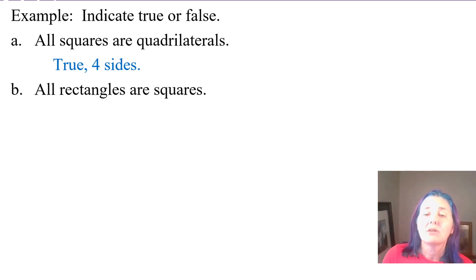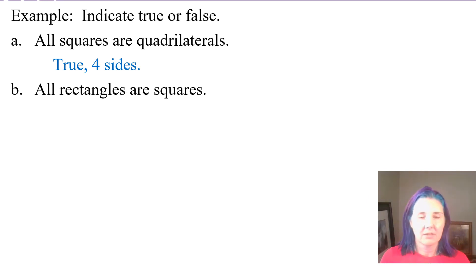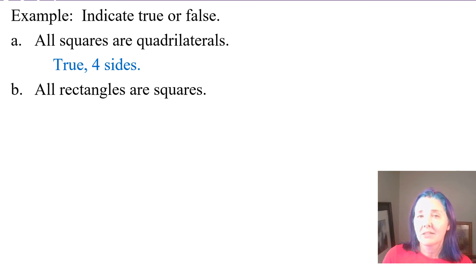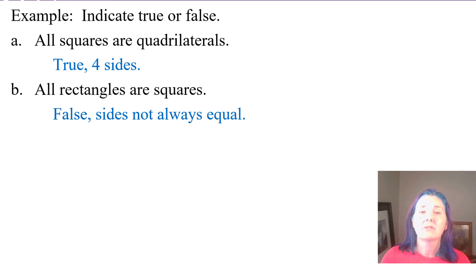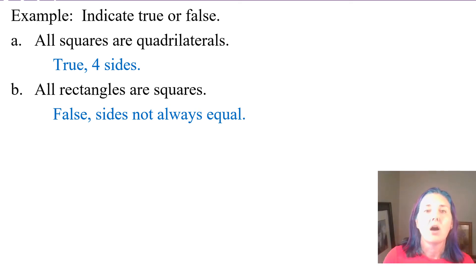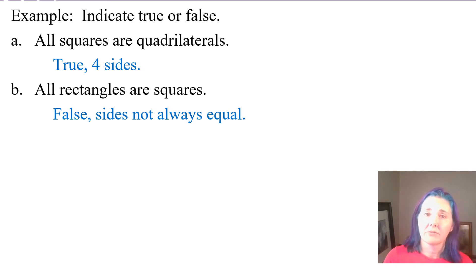How about if I said all rectangles are squares? Is that true? Well, if you can envision even one rectangle that's not a square, then it's false. And in this case, it is false because in order to be a square, a rectangle has to have all sides equal. And by the definition of a rectangle, that's not necessary. All that has to be the case is that it has to be a parallelogram and it has to have a right angle.